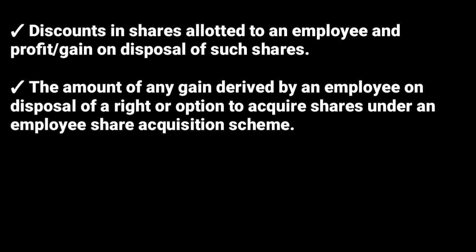The last scope or composition of employment income is the amount of any gain derived by an employee on disposal of a right or option to acquire shares under an employee share acquisition scheme. So if you sell your rights to acquire shares in a company to someone else, the money that you get is also considered employment income.